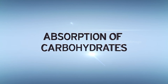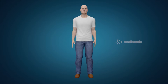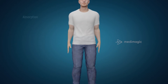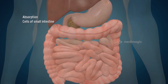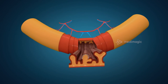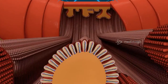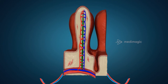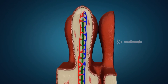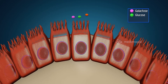Absorption of carbohydrates. The absorption of simple sugars occurs in the cells of the small intestine. The cells of the small intestine are called enterocytes, which can only absorb sugars in monomeric forms such as galactose, glucose, and fructose.